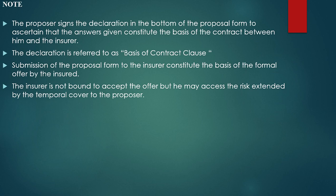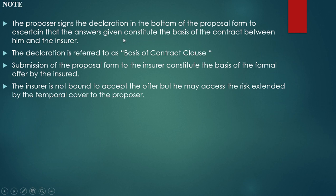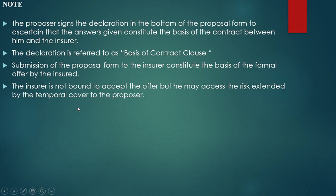Note that the proposer signs a declaration at the bottom of the proposal form. The declarations in the bottom of the proposal form constitute the basis of the contract between the proposer and the insurer — this is referred to as the basis of the contract clause. Submission of the proposal form to the insurer constitutes the formal offer by the insured. The insurer is not bound to accept the offer, but may assess the risk and extend a temporal cover to the proposer.